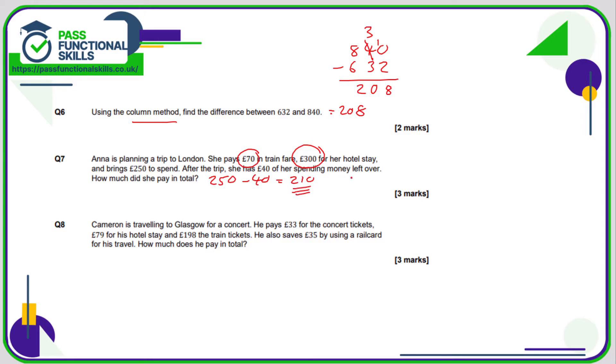So she spends 300 plus 70, so 370, for the hotel and train fare combined, plus 210 spending money. So let's add these together. Zero, seven plus one is eight, three plus two is five. So in total she pays 580 pounds.